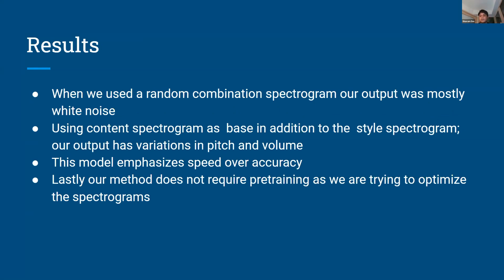For our results, as seen in the demo, we observed some changes in the volume and the pitch. Initially, our approach was to use random operations on spectrograms, and our output was mostly white noise. Using the content spectrogram as a base instead provided better inputs, as seen in the demo. Our model emphasizes speed over accuracy.